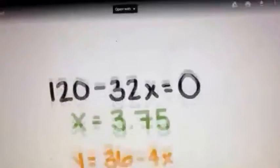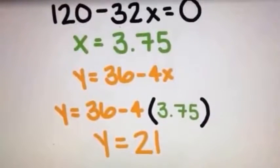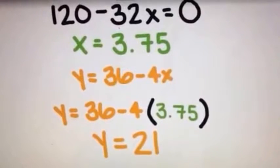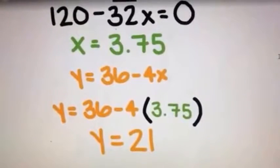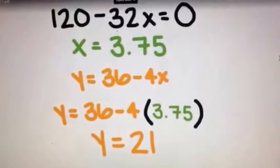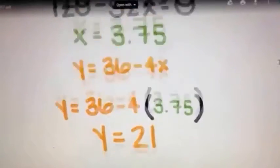She set that equal to 0 to find her X and Y dimensions of the garden beds where X is equal to 3.75 feet and Y is equal to 21 feet.